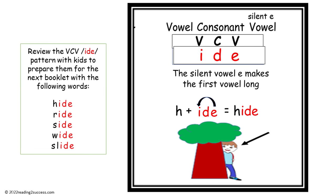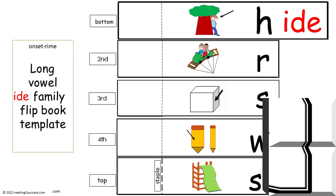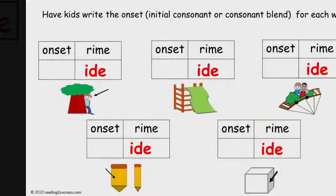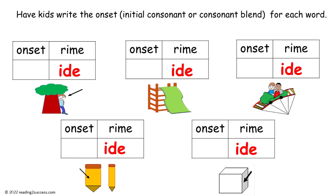The next onset kids will be working with follows a VCV pattern — it is IDE — and the following words will be practiced: hide, ride, side, wide, and slide. This is a template to make the booklet. Have kids write the onset — the initial consonant or consonant blend — for each word. This is the completed example.